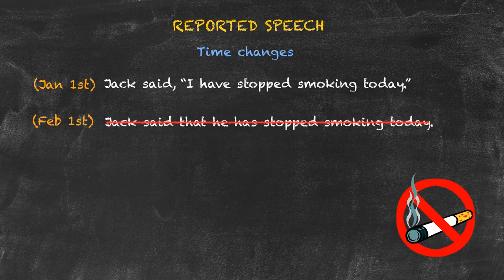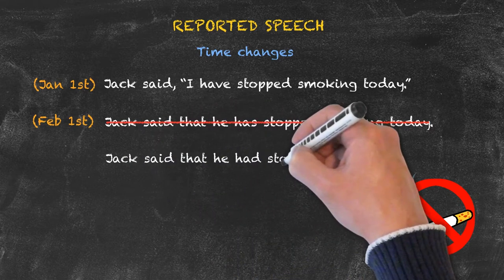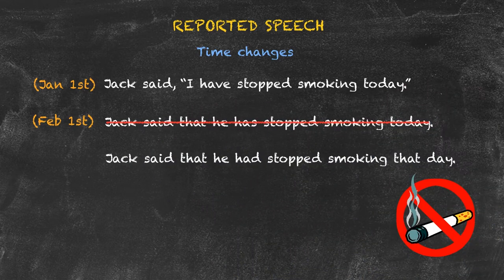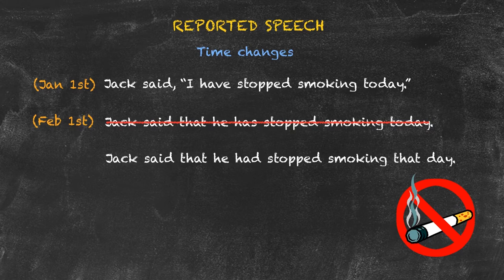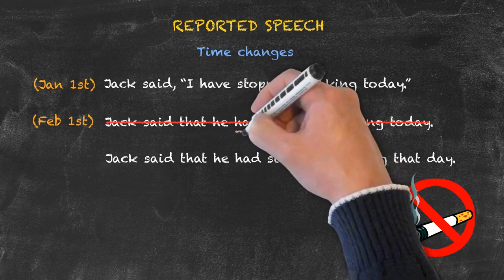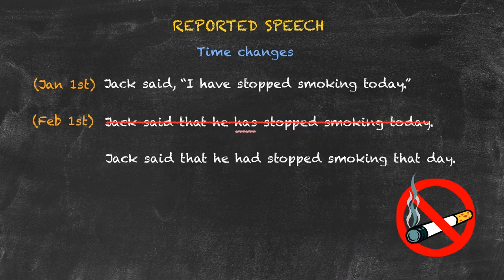All right, let's see how you did. The sentence should read: 'Jack said that he had stopped smoking that day.' Why are these changes necessary? Because, as we said, if we leave it as 'today,' that would indicate that Jack stopped smoking on February 1st when it was on January 1st. We can't leave 'has' as 'has' because we have to backshift the tense to indicate that it was said in the past.